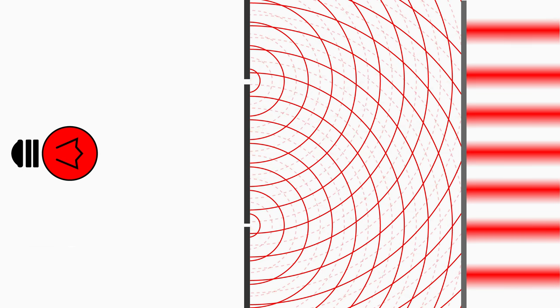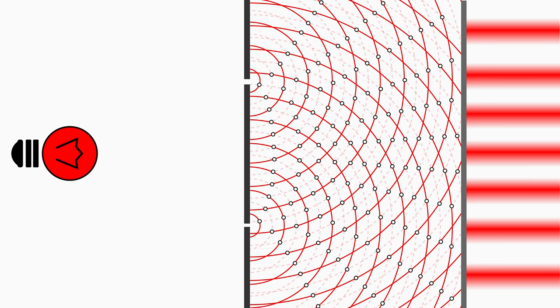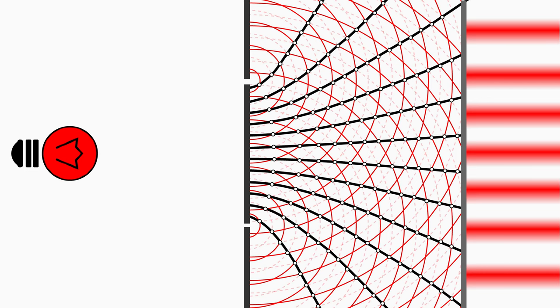So what about the dark fringes? Follow the points of destructive interference up to the screen and you will see that they lead to the dark fringes.